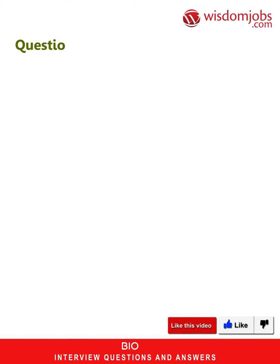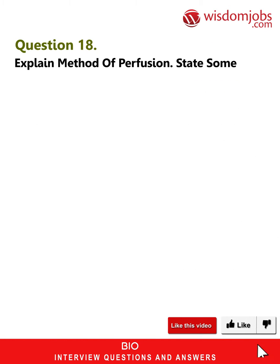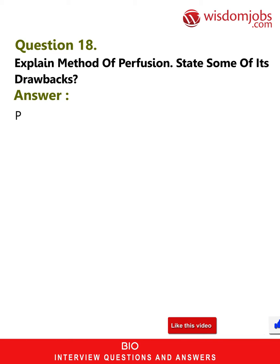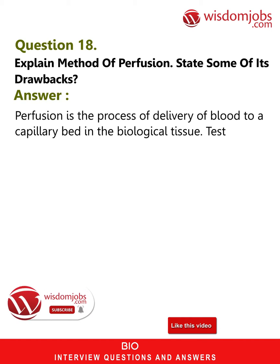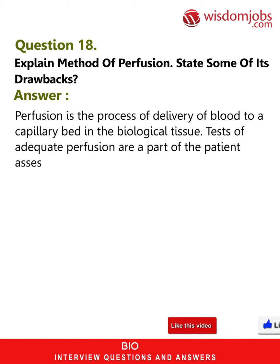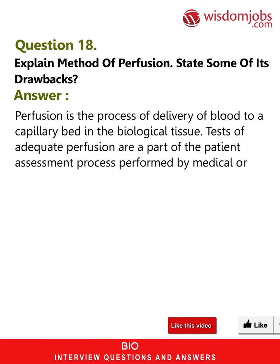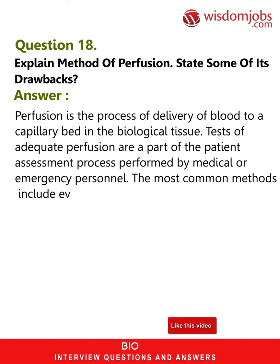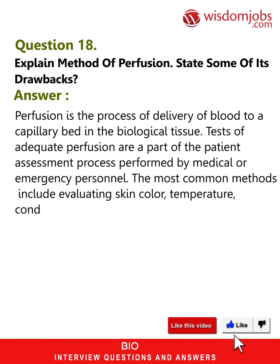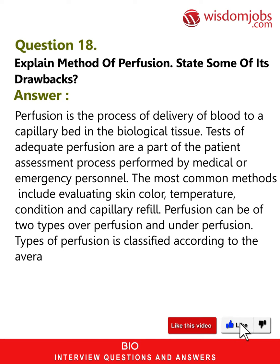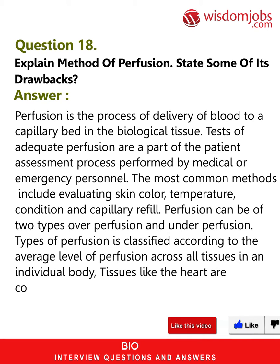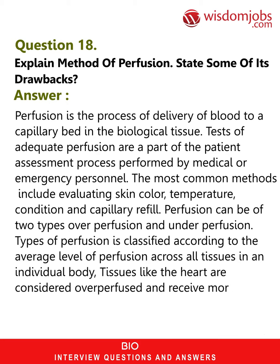Question 18: Explain the method of perfusion and state some of its drawbacks. Perfusion is the process of delivery of blood to a capillary bed in biological tissue. Tests of adequate perfusion are part of patient assessment performed by medical or emergency personnel. The most common methods include evaluating skin color, temperature, condition, and capillary refill. Perfusion can be of two types: over-perfusion and under-perfusion, classified according to the average level of perfusion across all tissues.